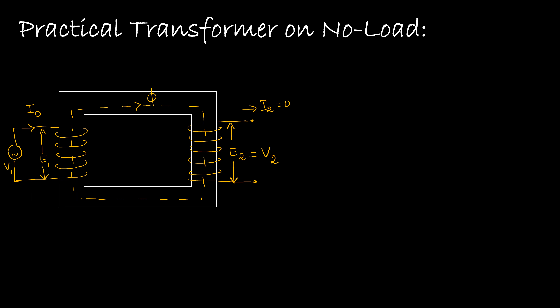This is the basic operation of a practical transformer under no load conditions. Now the practical transformer has an iron core, and this iron core will have two types of losses: one is hysteresis loss and the other is eddy current loss.